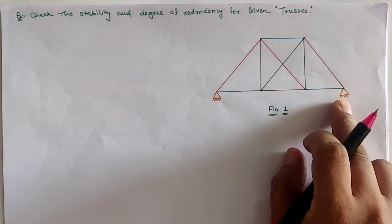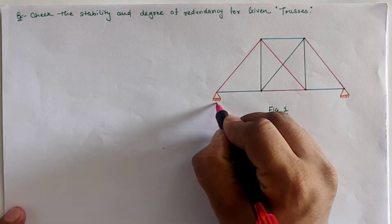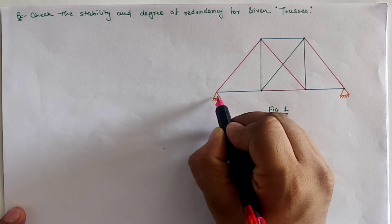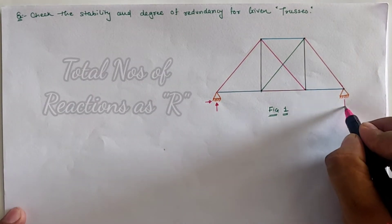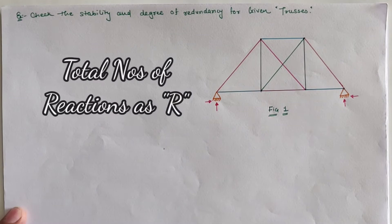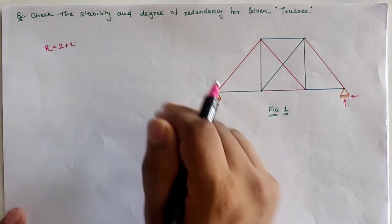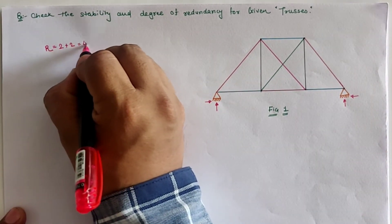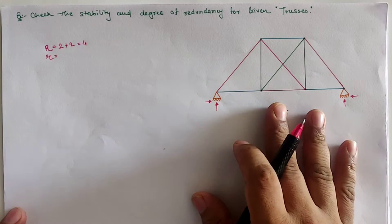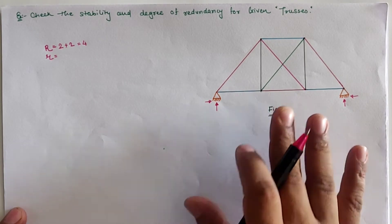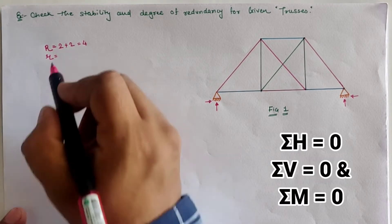Figure 1 has both supports as hinge supports. For the stability criteria, we first calculate the number of reactions. At each hinge support there are two reactions — vertical and horizontal — so total reactions, indicated by capital R, is 2 plus 2, giving R = 4. Small r means number of equilibrium conditions; for a plane truss there are three equilibrium equations: sigma H = 0, sigma V = 0, and sigma moment = 0.